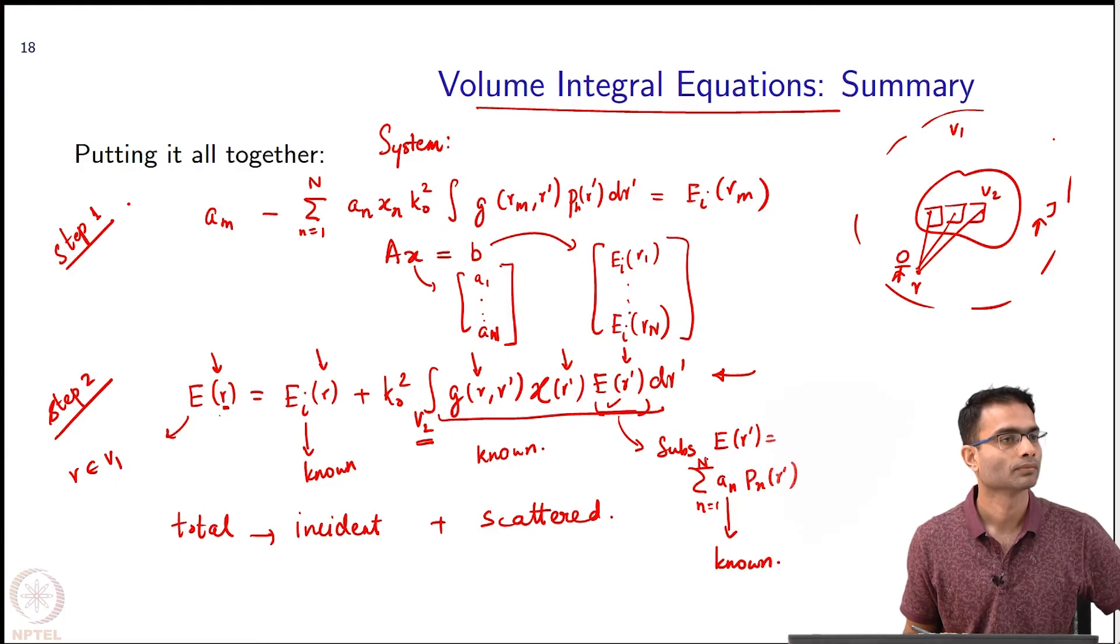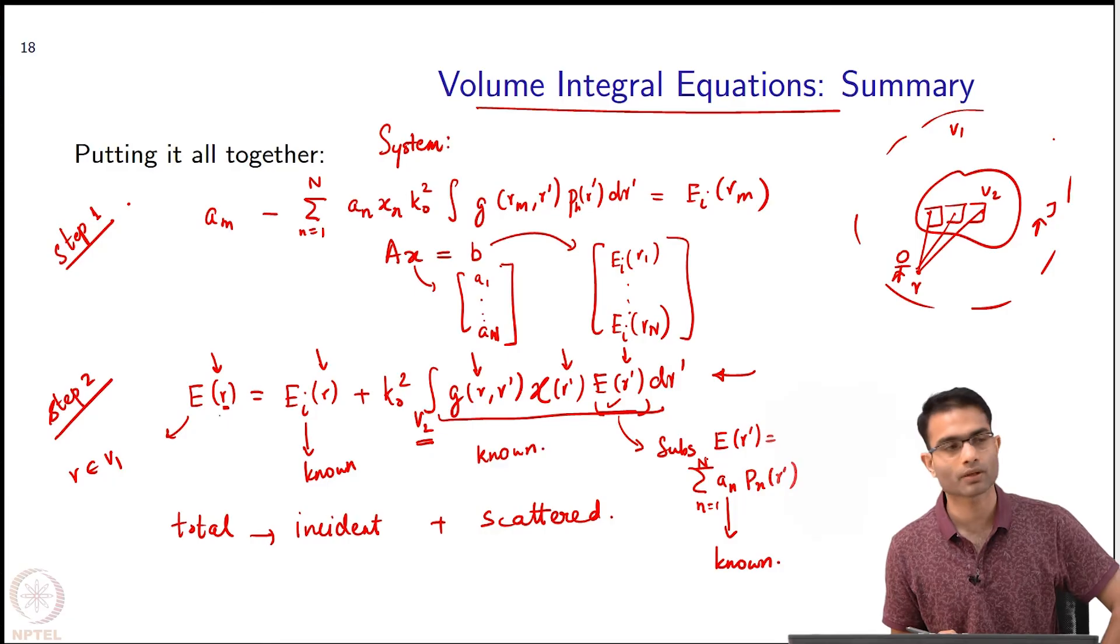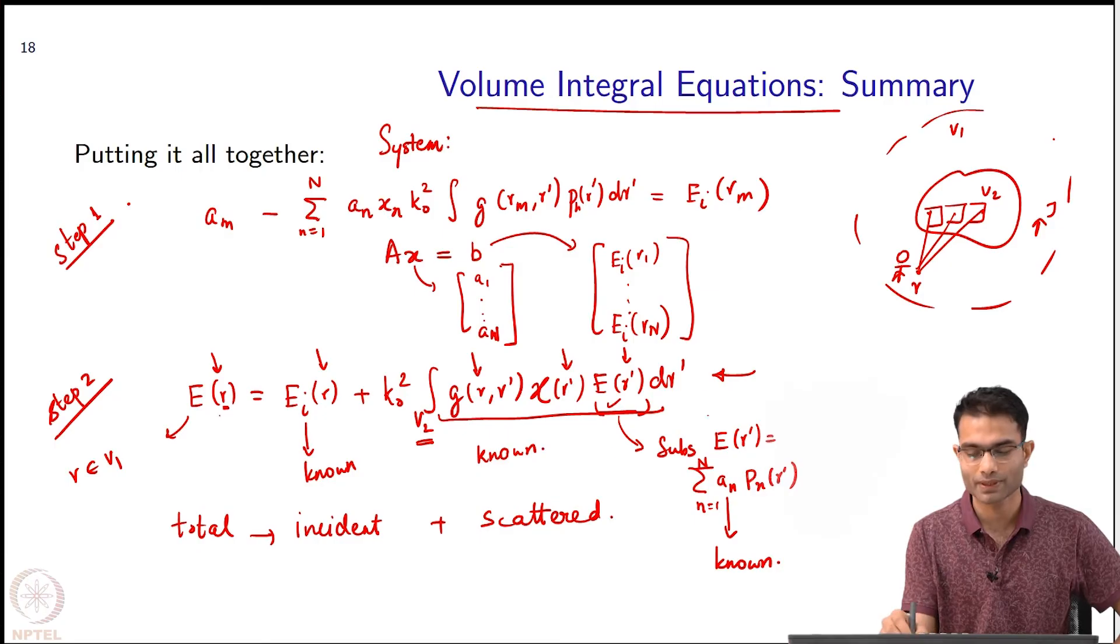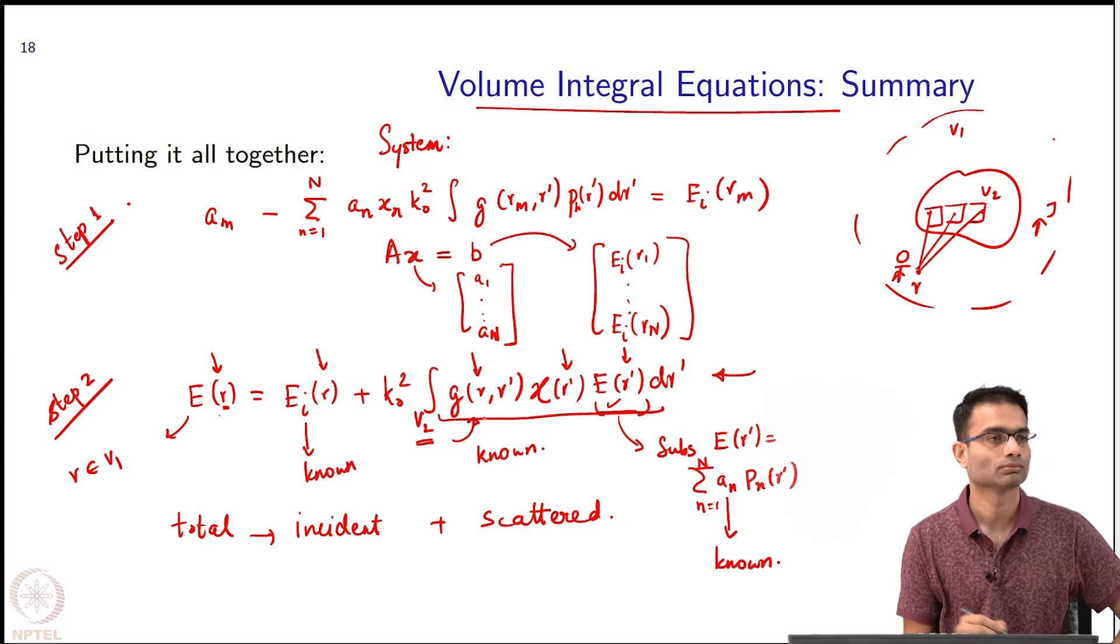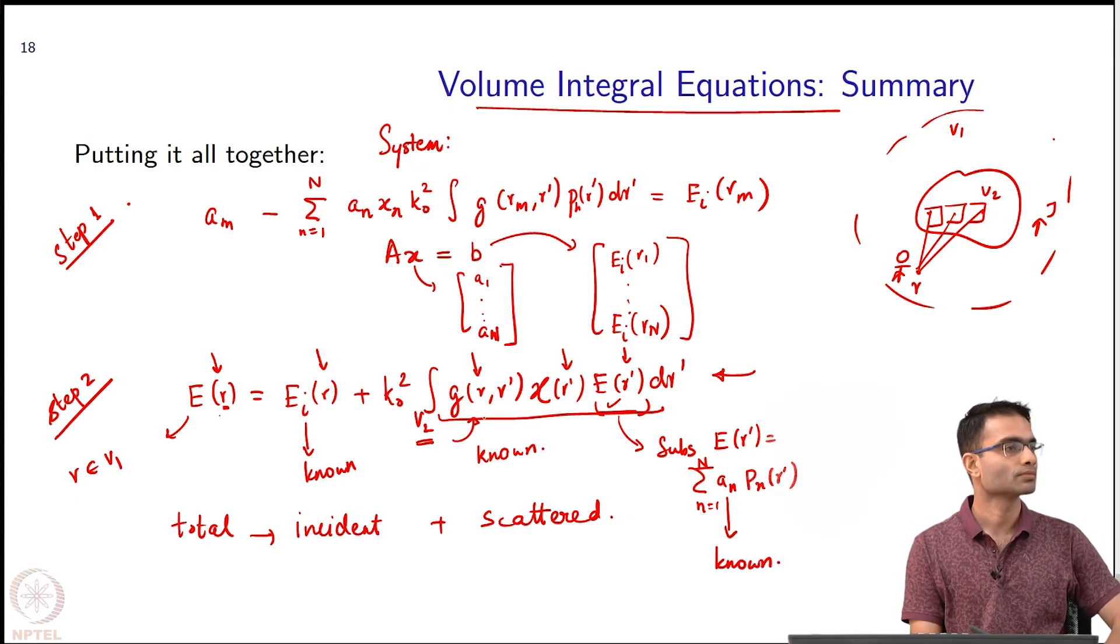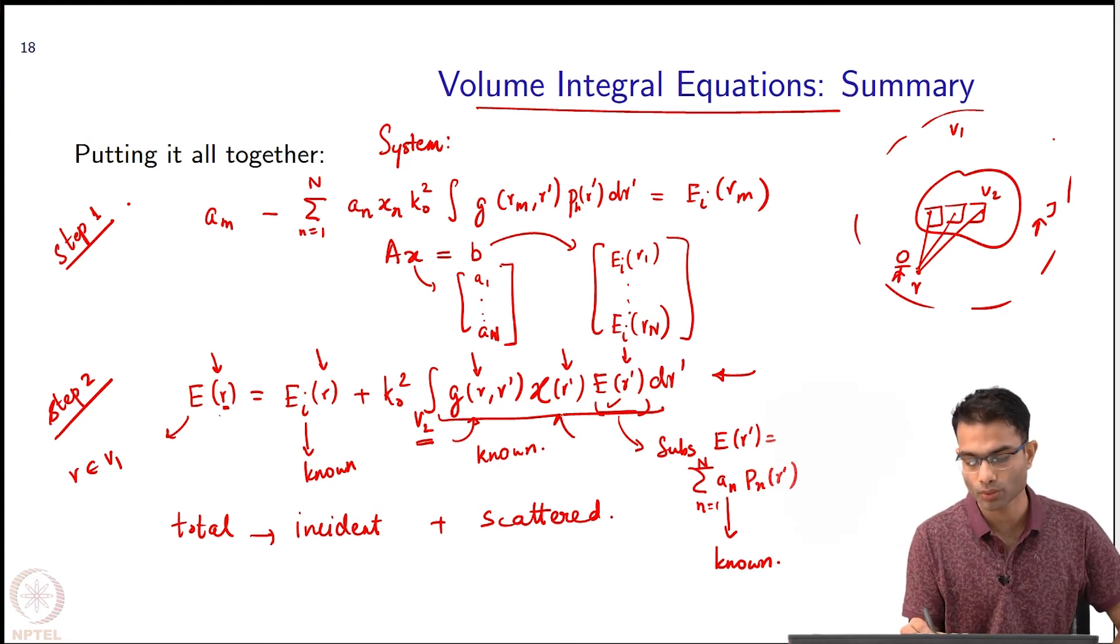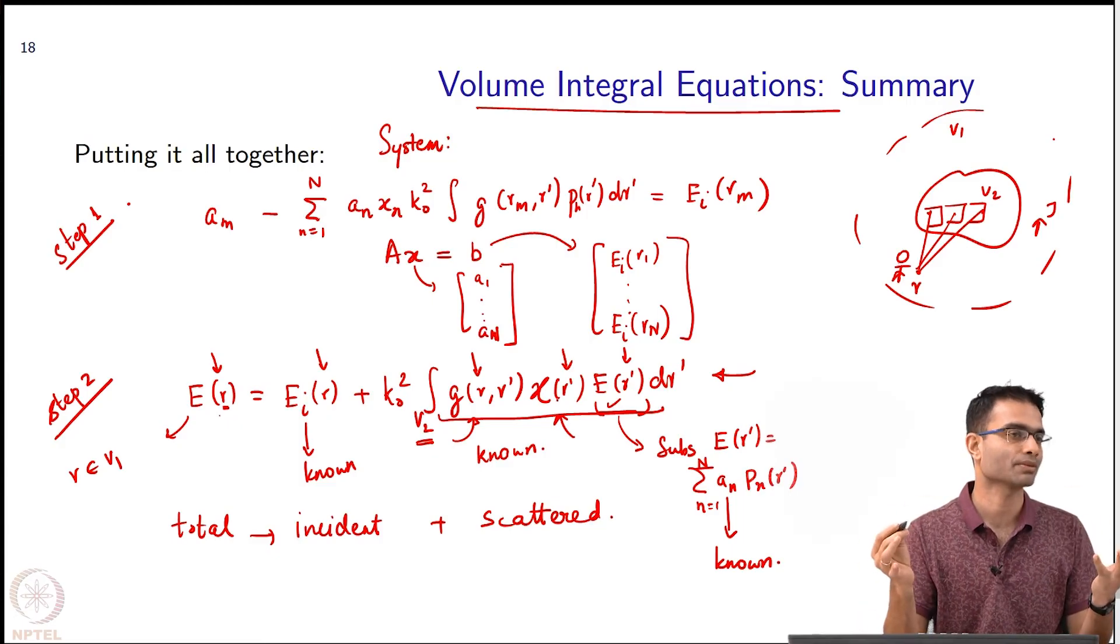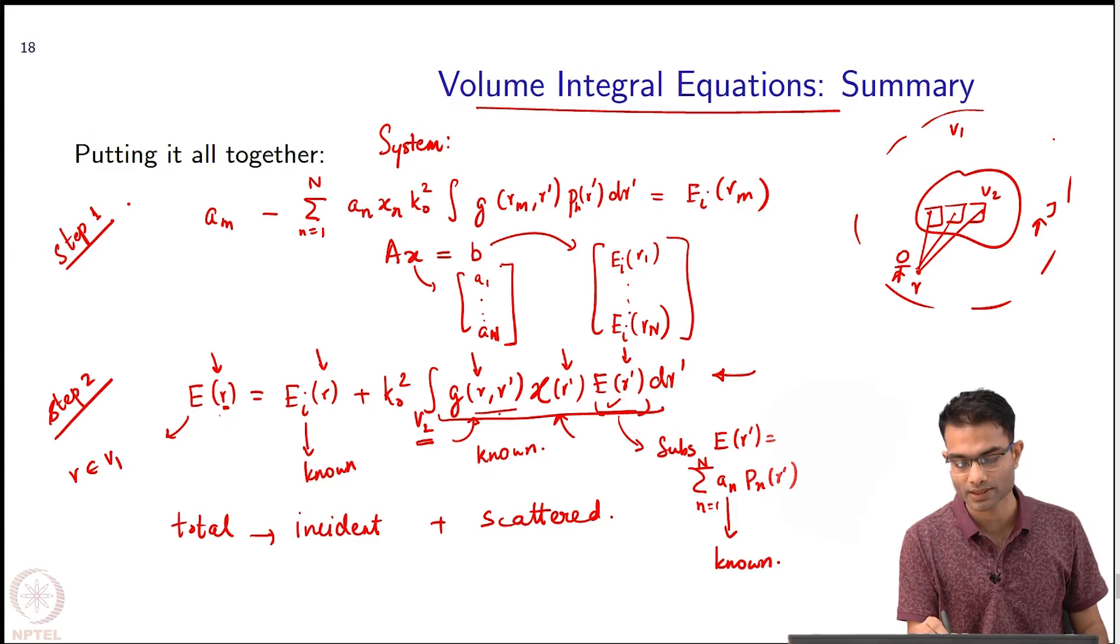We are using the same square to circle grid approximation. Yeah, you use the same square grid, square to circle grid approximation. You do not change the way you evaluate this integral, right? The only thing that changes as the observer location changes is this Green's function. That is all that you have to change. And the chi? The chi will not change. The chi belongs to the domain, so the chi will remain the same. It is non-zero only in V_2, so that will remain the same.